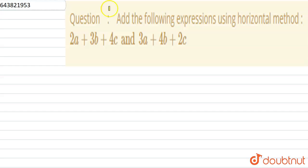So the question asks here is, add the following expressions using horizontal method. The question given is 2a plus 3b plus 4c and 3a plus 4b plus 2c. So we have to add this by using horizontal method.